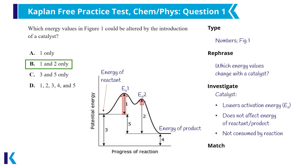Energy value five is the difference in free energy of the reactant and product — while this tells me about the spontaneity of the system, it will not be affected by a catalyst. And in answer choice D, energy value four is unaffected by the presence of a catalyst, since that is the energy of the product.